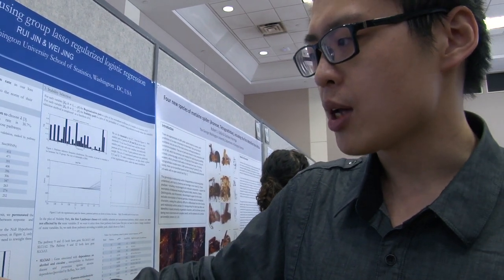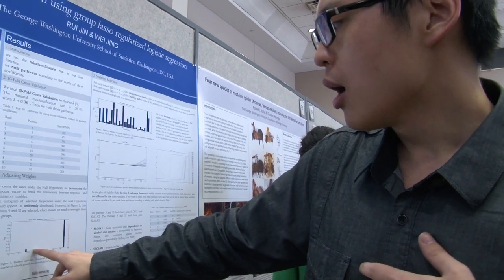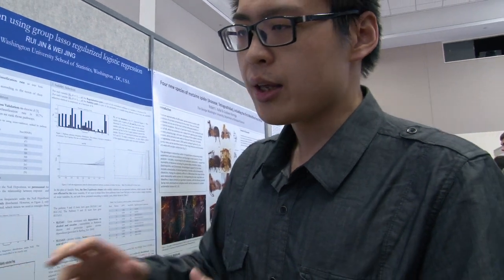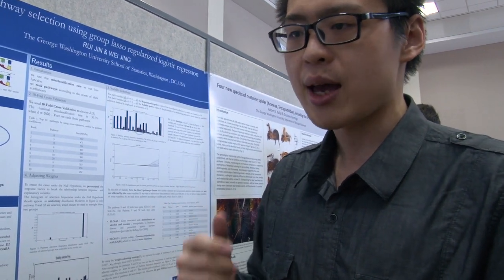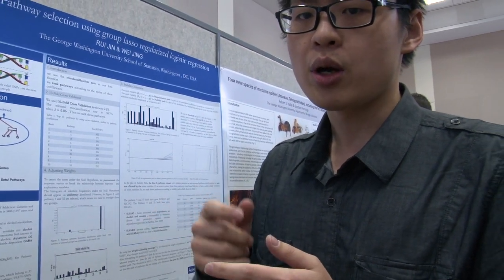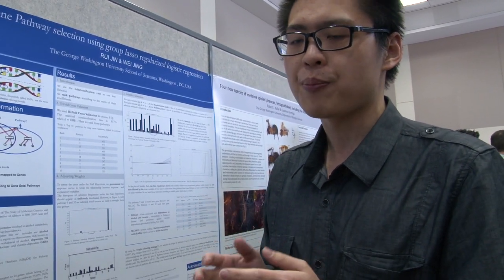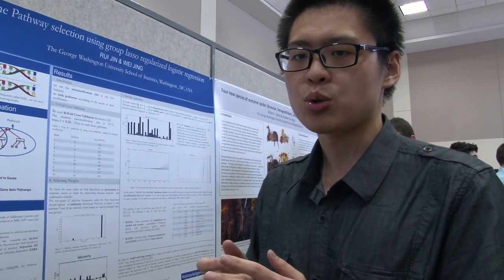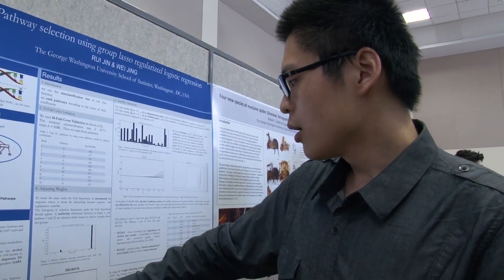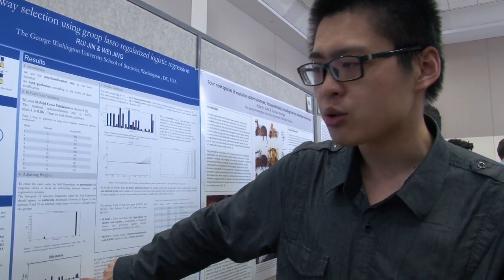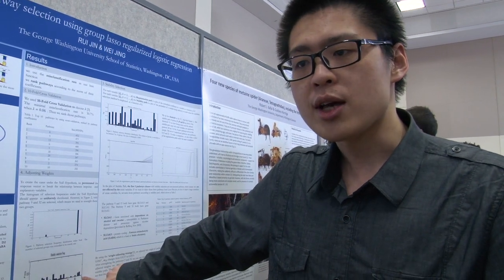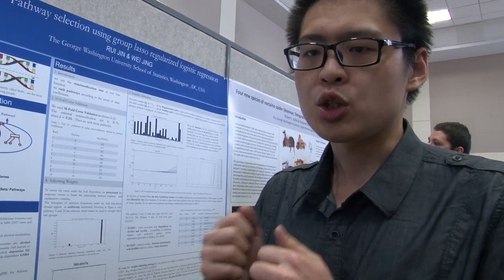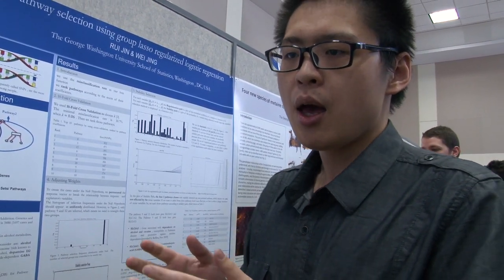We also perform the null test. At first, the null test result appears uniformly distributed, which means there is some kind of bias in our analysis. So we try to reduce that bias by adjusting the weight of pathways. This plot shows the result after we adjust the weights — it appears more uniform than before, which means when we do the null test, each pathway has an equally likely chance to be chosen.